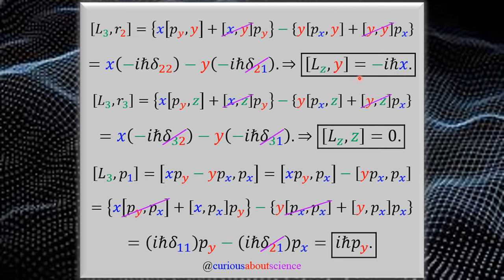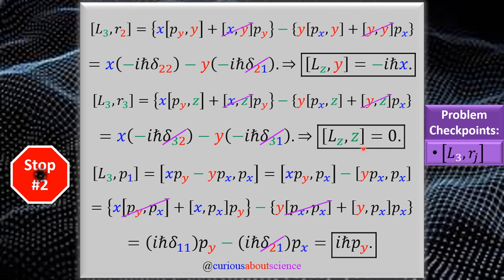Moving to the third component: L3 and R3, Z with Z. After distributing, all position-position terms cancel to zero. The Kronecker deltas delta(3,2) and delta(3,1) have no matching indices, so both go to zero, and we conclude [L3, R3] = 0. This brings us to our first checkpoint: the commutator relations for one component of L with all components of R for j equal 1, 2, 3.